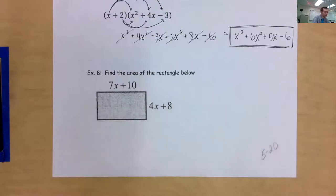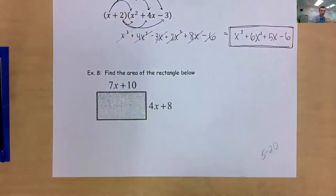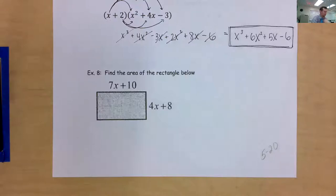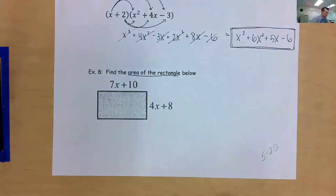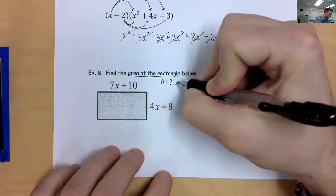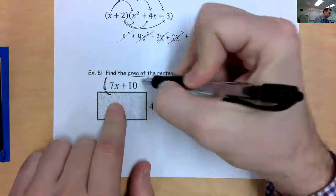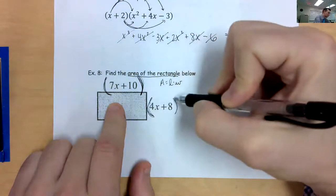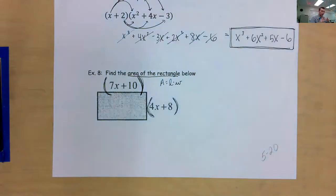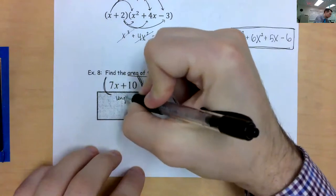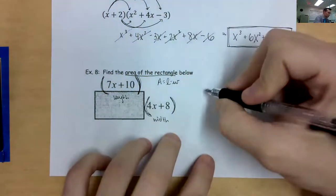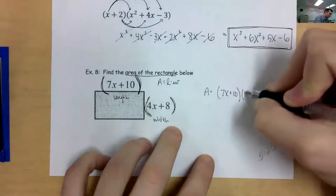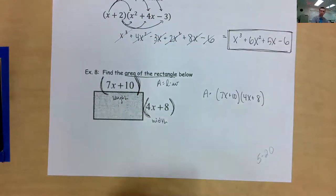Example 8 looks hard, but I swear unit 5 is almost more of a reading test — how much can you comprehend in Algebra 1? In Algebra 1, example 8 asks me to find the area of a rectangle. If you're in 9th or 10th grade in Algebra 1, you should know that the area of a rectangle is length times width. When I multiply the length, it's a quantity. I highly recommend putting any quantity in parentheses.